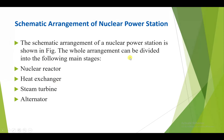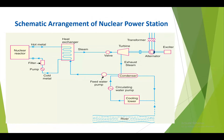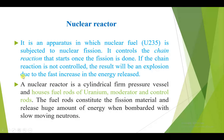The whole arrangement can be divided into the following main stages: the nuclear reactor, heat exchanger, steam turbine and alternator. First we will study the nuclear reactor. A nuclear reactor is an apparatus in which the nuclear fuel — that is U-235 — is subjected to a nuclear fission reaction.